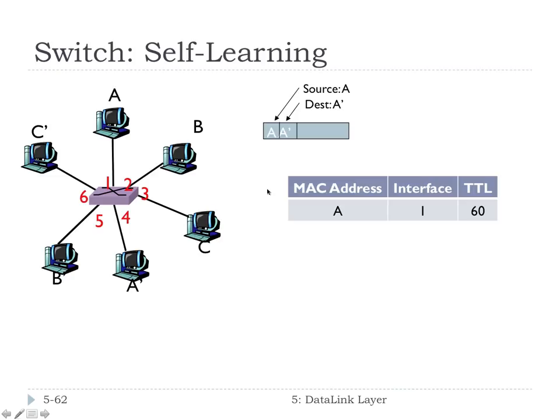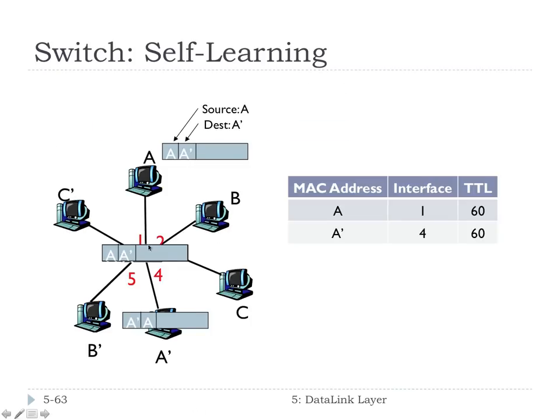In response to that, A prime is going to send back a packet to the switch, from A prime to A, most likely if we're in any kind of bi-directional communication. When this happens, the switch will learn, okay, well, A prime is on number 4, so the next time I need to send something to A prime, I'm just going to send it out on link number 4, and I don't have to send it to everybody else. Does that make sense?